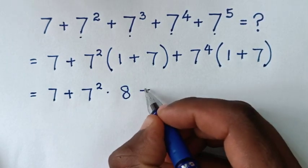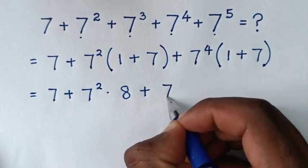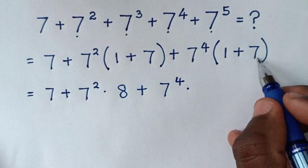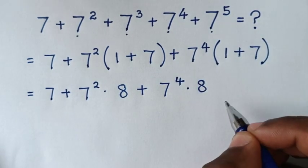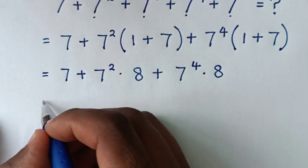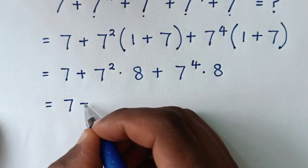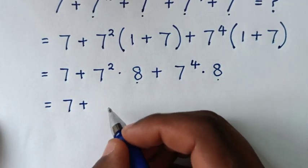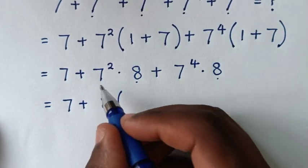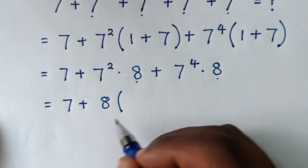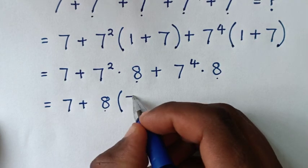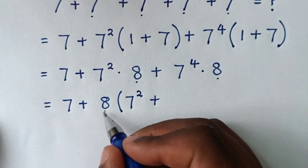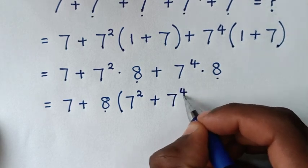So here it will be times 8, then plus 7 power 4 times 8, and inside the bracket 1 plus 7 is 8. Then in the next step, 8 is common. So we take 8 out of bracket: 7 square times 8 divided by 8 is 7 square, plus 7 power 4 times 8 divided by 8 is 7 power 4.